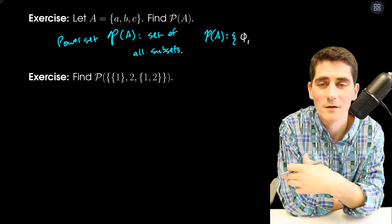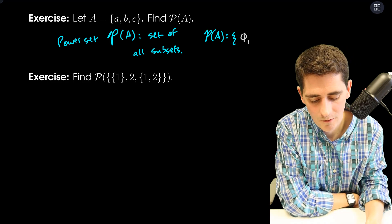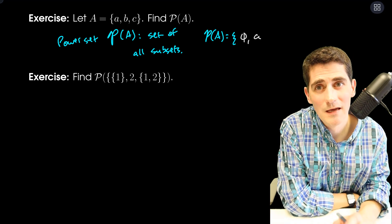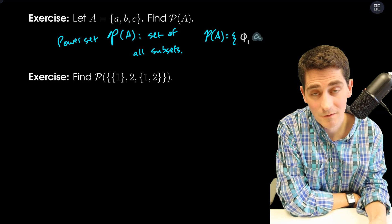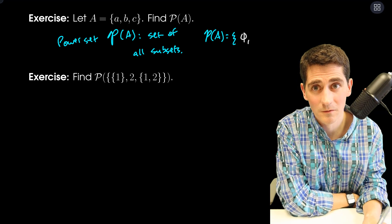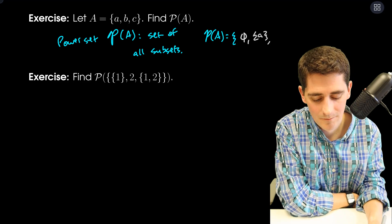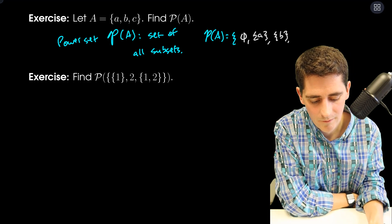Then I start thinking about all the subsets of cardinality one. Don't just write A, because A is an element — the elements of the power set are sets themselves. So I have the set with only one thing in it: {A}, then {B}, then {C}.